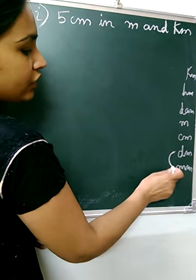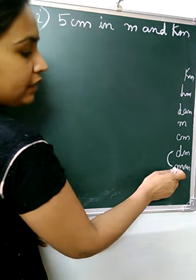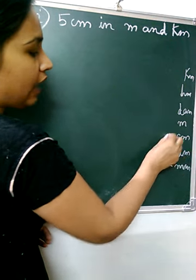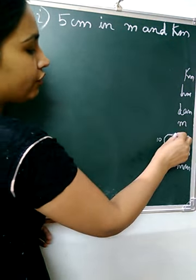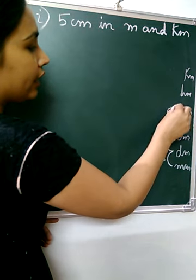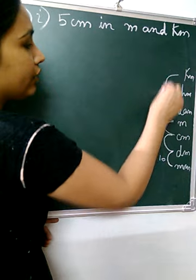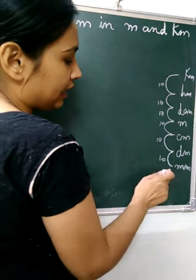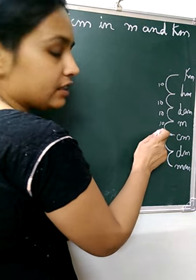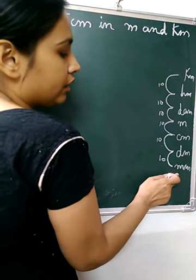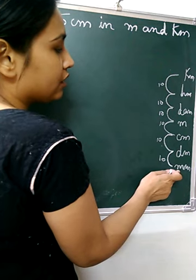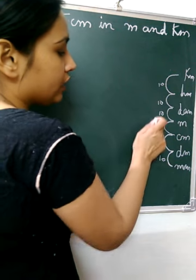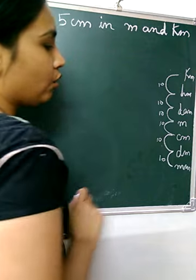As we go up, millimeter is smaller than kilometer. Each step going up is 10 times. Then decimeter and centimeter — again a difference of 10, then again 10, then 10, then 10, then 10. So if I talk about the distance between millimeter and centimeter, that is 10 into 10, which is 100. The difference between millimeter and meter is 10 into 10 into 10 — that is 1000.